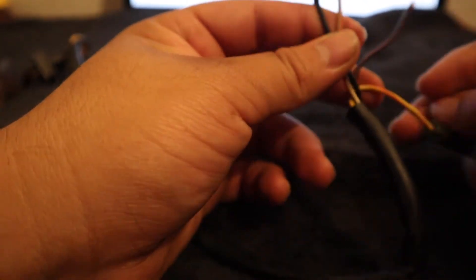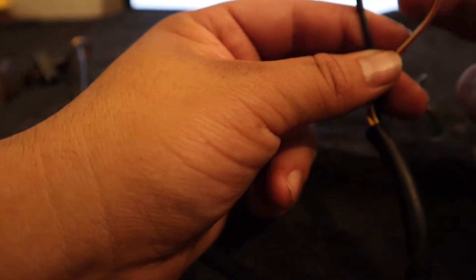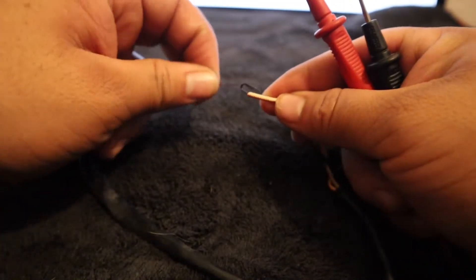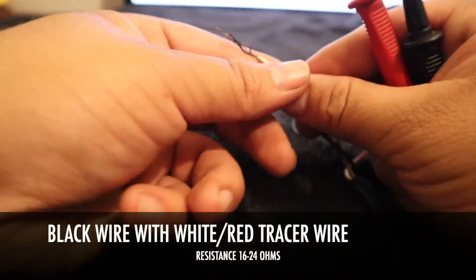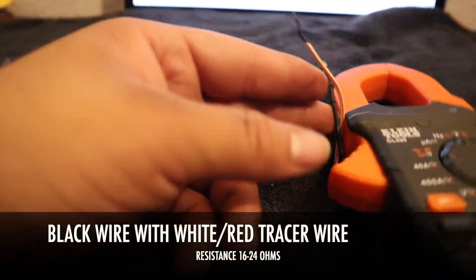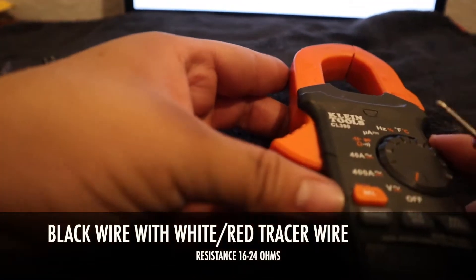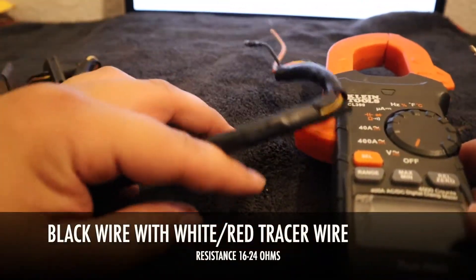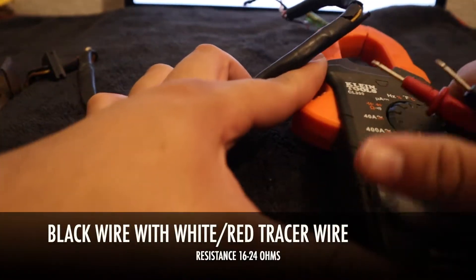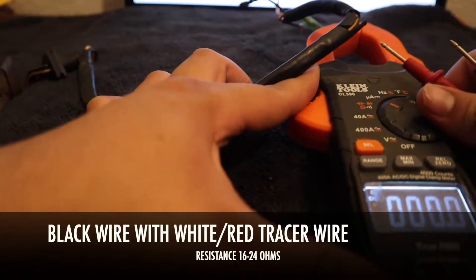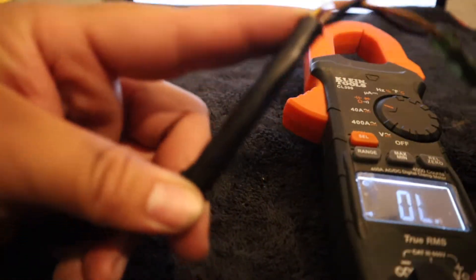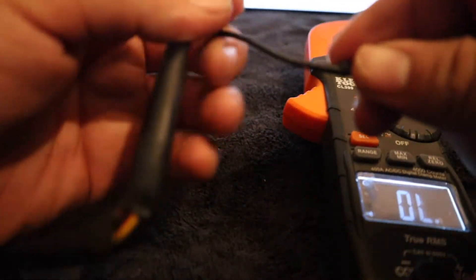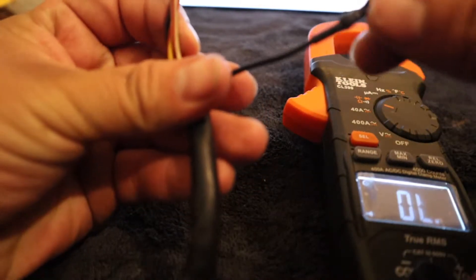We're gonna be testing the stator here. We test black wire and the white and red wire, we should get a resistance between 16 and 24 ohms. So we got the multimeter here, I'm gonna put it on ohms, the horseshoe as you can tell.